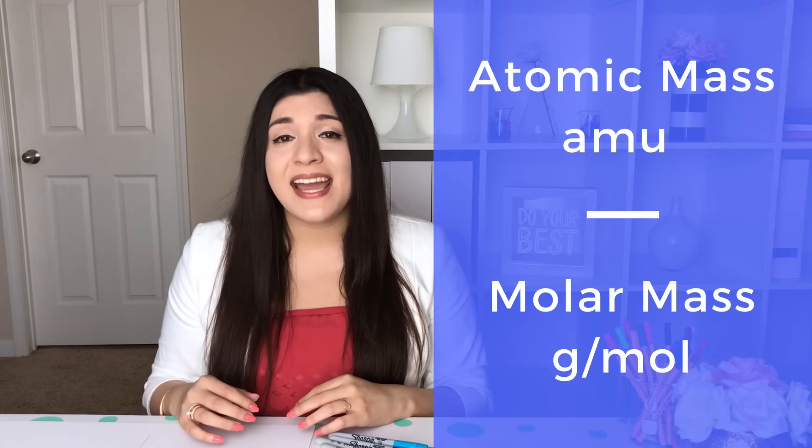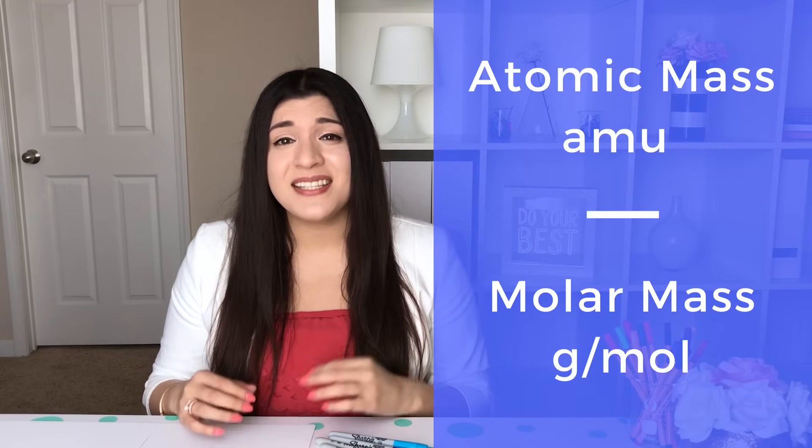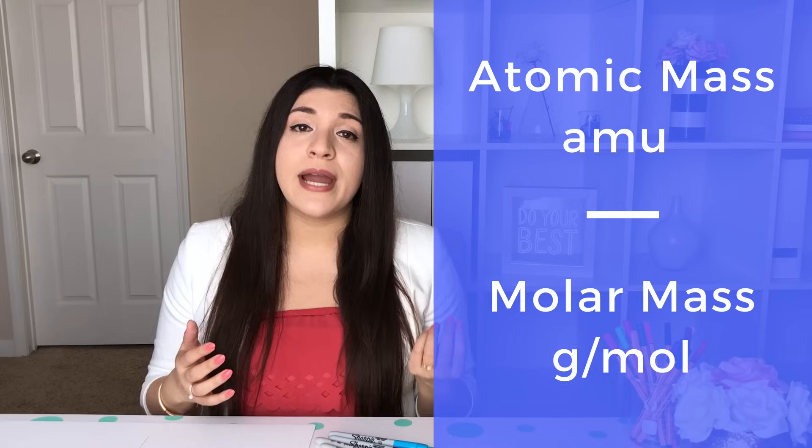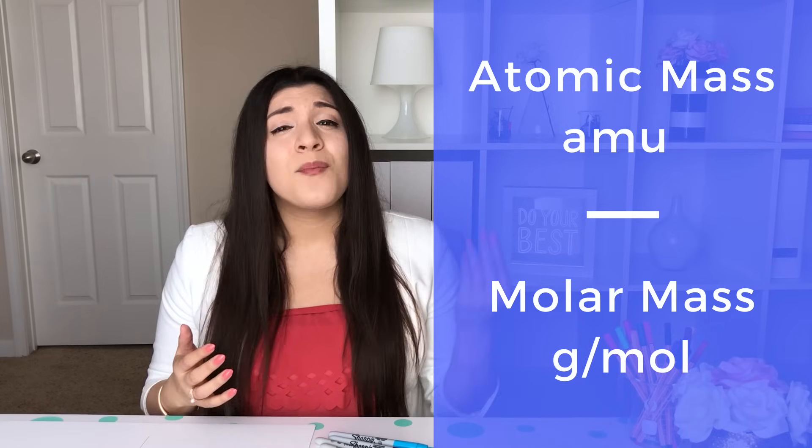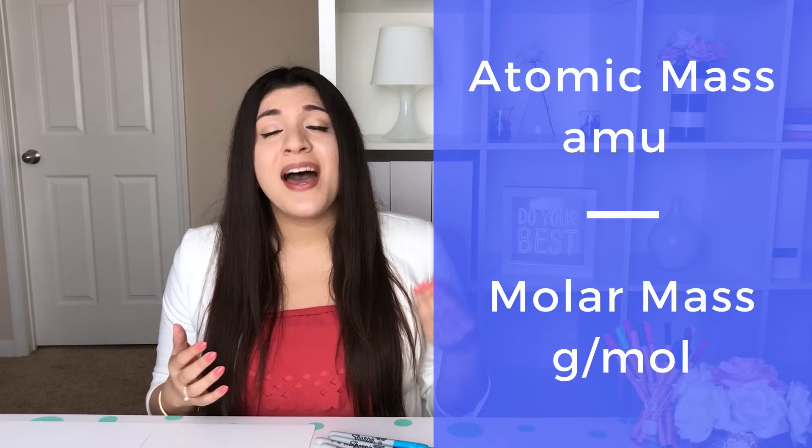Two types of masses used in chemistry: atomic mass and molar mass. Both refer to the mass of an element, but they have different units. Atomic mass has AMU or atomic mass units, while molar mass has grams per mole. That molar refers to the moles on the bottom, and the mass refers to the grams on top.